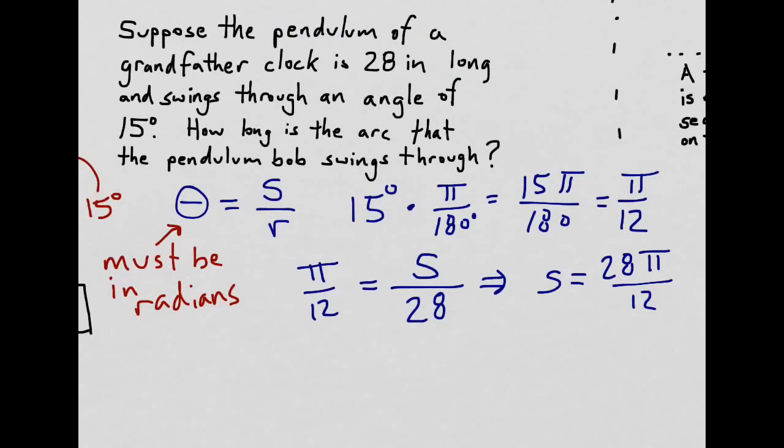And we can simplify it because 28 and 12 are both divisible by 4. That's the same as s is equal to 7 pi over 3.